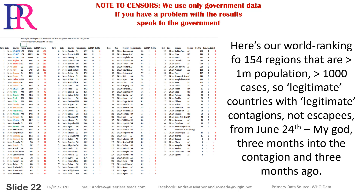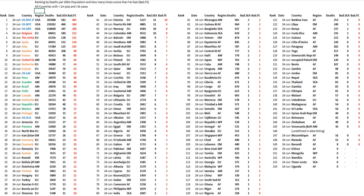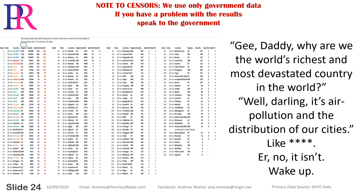Here's our world ranking for 154 regions with greater than 1 million population and greater than 1,000 cases — legitimate countries, or a couple of cities, not escapees — from June 24th. That's three months into the contagion and three months ago. 'Gee daddy, why are we the world's richest and most devastated country?' 'Well darling, it's air pollution and the distribution of our cities.' No, it isn't. Wake up.